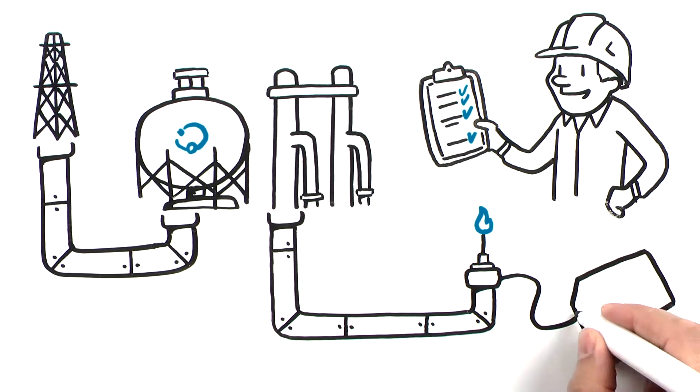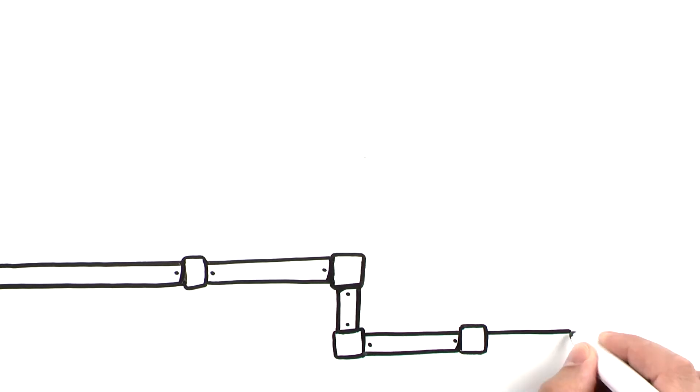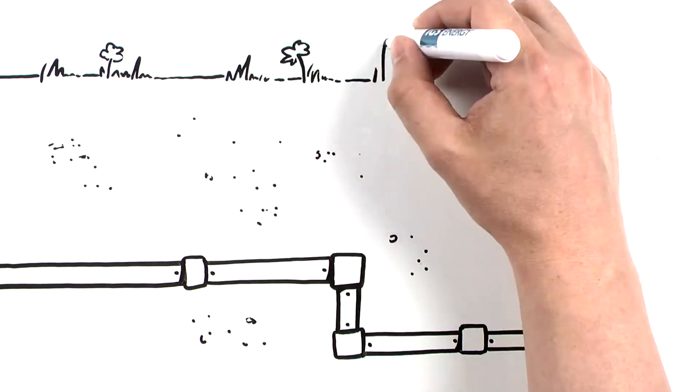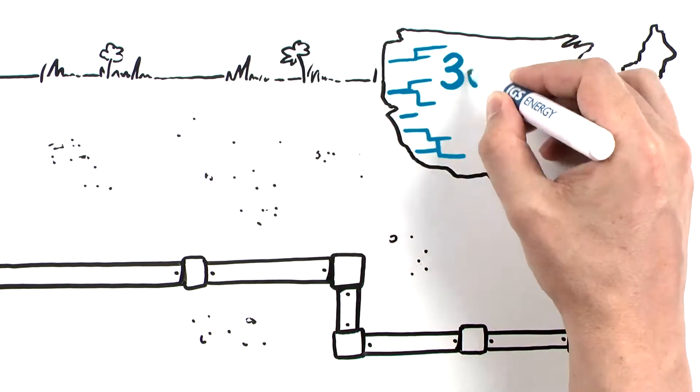Once collected, the gas is ready to be transported through transmission pipelines which are typically located underground. These run all across the country and together cover more than 300,000 miles.